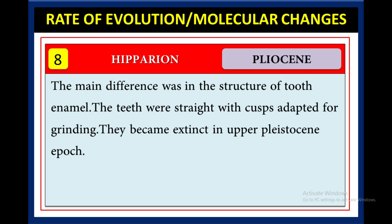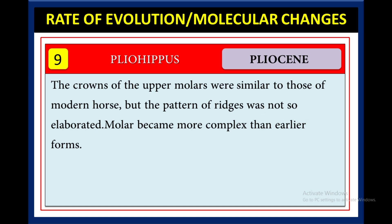Then the Pliocene period started, and Hipparion came. The main difference was in the structure of tooth enamel — the teeth were straight with cusps adapted for grinding. They became extinct in the upper Pleistocene epoch.